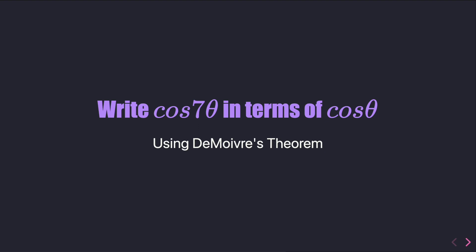In today's video, we are going to be solving this problem right here, which is saying to write cosine 7 theta in terms of cosine theta. And we're actually going to use De Moivre's theorem for this.